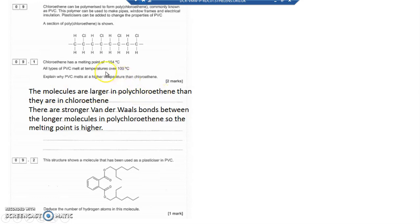So one mark saying the molecules are larger in polychloroethene or PVC, and that there are stronger van der Waals forces between the molecules in the PVC polymer, so the melting point's higher.